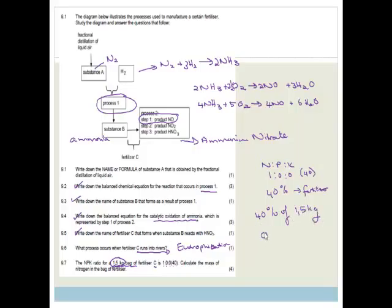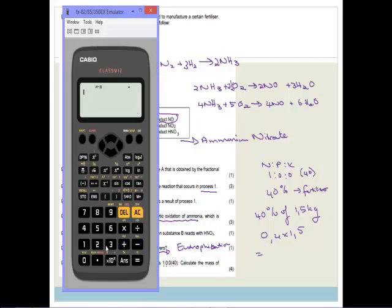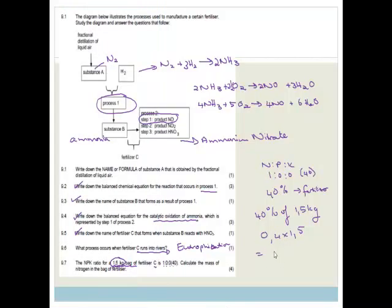We're just going to go 0.4 times 1.5. And we're going to pop it in our calculator. So we're going to go 0.4 times 1.5, and that is going to give us 0.6. That's 0.6 kgs of that whole bag is nitrogen.